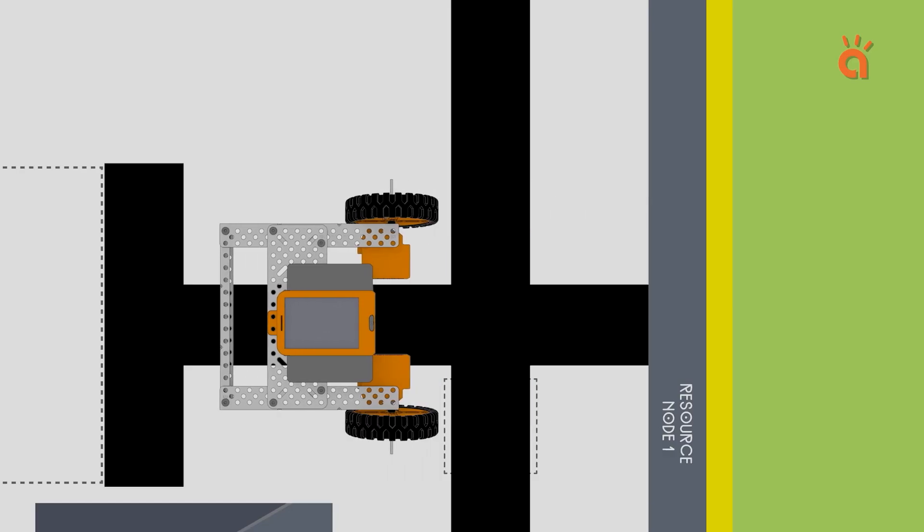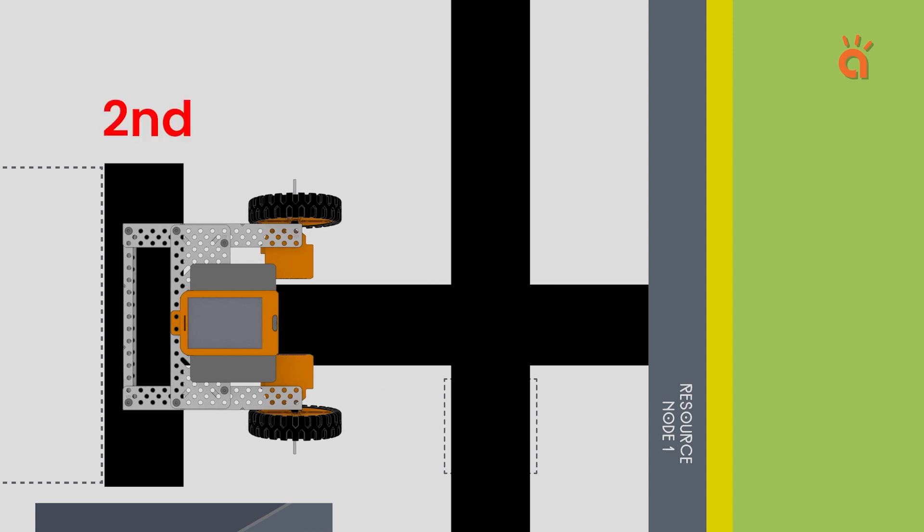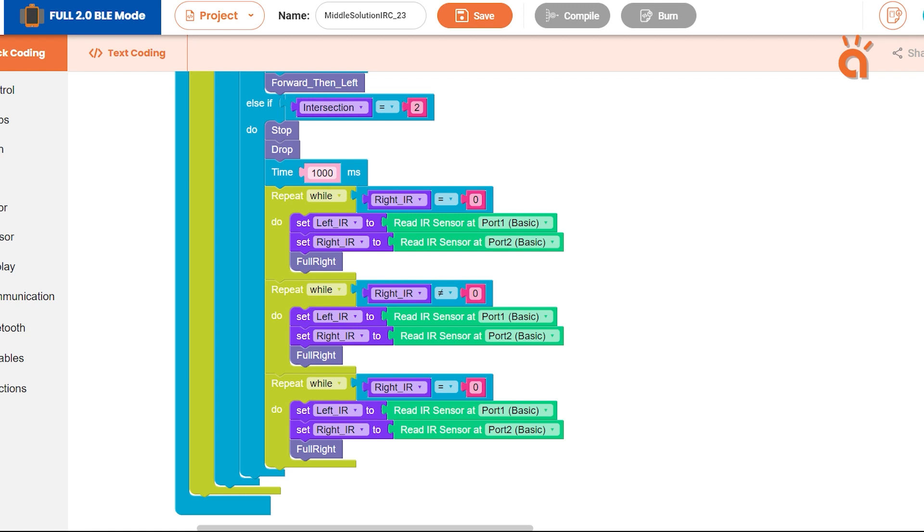Then after moving forward, the robot will reach the second intersection. On this intersection, the robot will stop and drop the resource and then take a 180 degree turn. We will use three loops to do this.